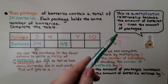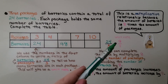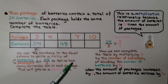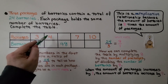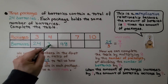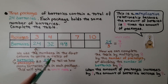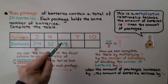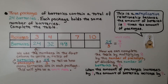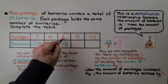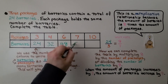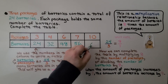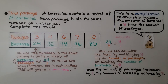This is a multiplicative relationship because the amount of batteries is 8 times the amount of packages. We complete the table by multiplying 8 by the number of packages. If we have 4 packages, 4 times 8 is 32 batteries. We find another amount by dividing: 48 divided by 8 is 6 packages. Then 7 times 8 is 56, and 10 times 8 is 80. When the number of packages increases by 1, the number of batteries increases by 8.